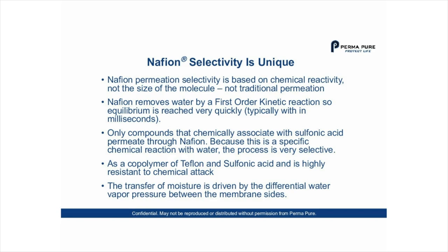Traditional permeation works like a bug screen — holes of a certain size match up with molecules you want to pass from one side to the other. That's not how Nafion works. With Nafion, water actually becomes part of the chemical structure, and as a result Nafion moves water by a first-order chemical reaction, reaching equilibrium very quickly. Only compounds that chemically associate with the sulfonic acid permeate through Nafion. Because this is a specific chemical reaction, the process is very selective — when humidifying with Nafion, truly only water passes through, not oxygen or other chemicals in solution.